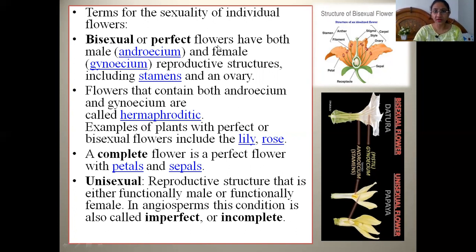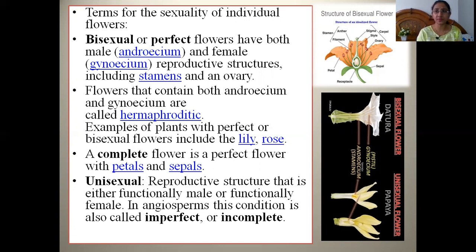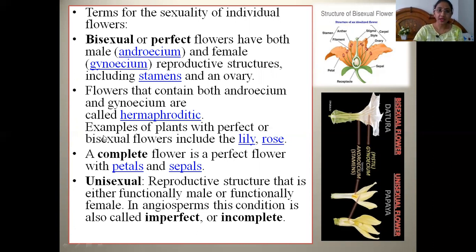A bisexual or perfect flower has both the male part, androecium, and the female part, gynoecium — including stamens and ovary — as reproductive structures. These flowers are also called hermaphrodite flowers. Examples of plants with bisexual flowers are lily and roses. A complete flower is a perfect flower with petals and sepals.